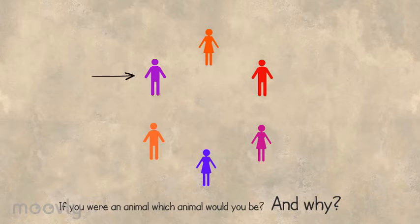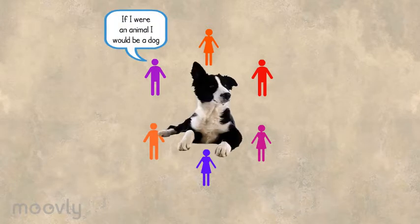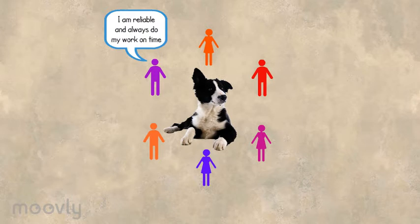You point to the first person who tells the group: If I were an animal, I would be a dog. I am reliable and always do my work on time, but sometimes I can also be a bit lazy.